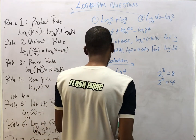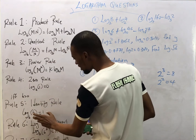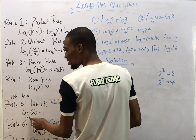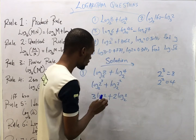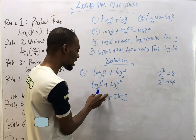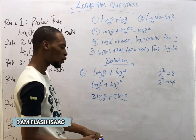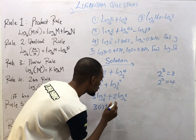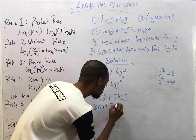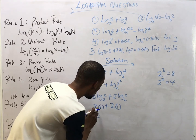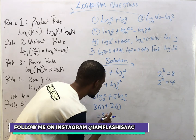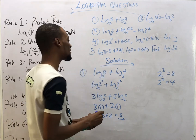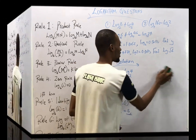Continuing, I see the identity law of logarithm, which states that a log of a number to its own base equals 1. Here we have log(2) base 2 — the number and the base are the same, so it equals 1. This means we have 3 × 1 + 2 × 1, which gives 3 + 2 = 5. So the answer is 5.